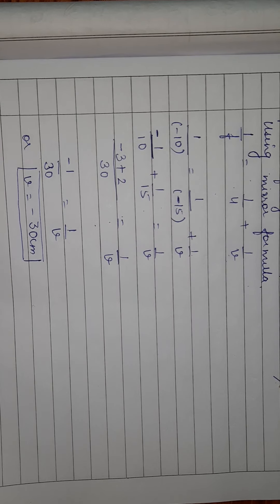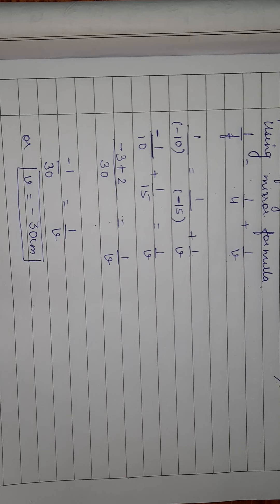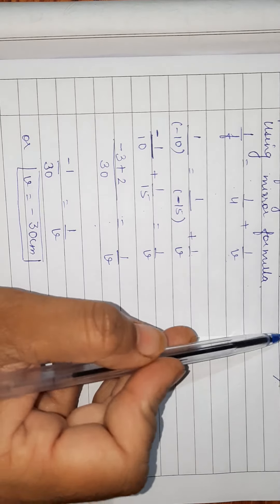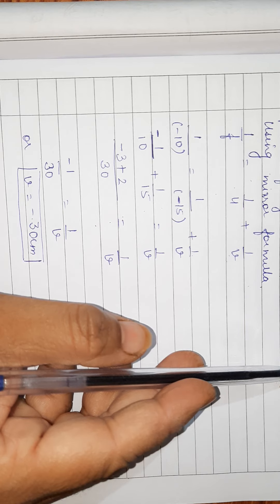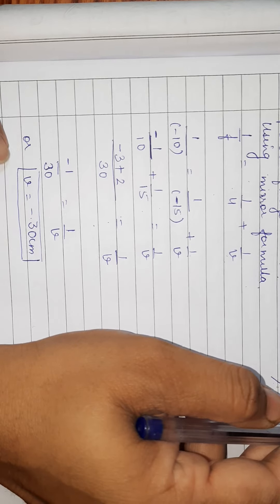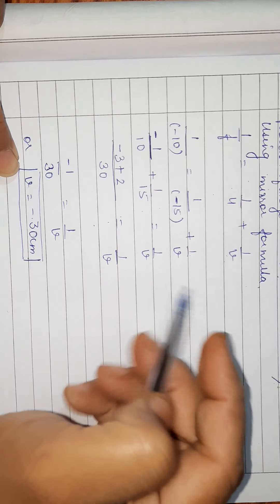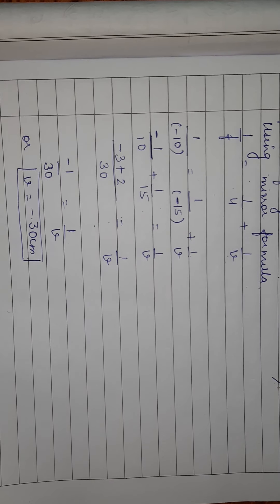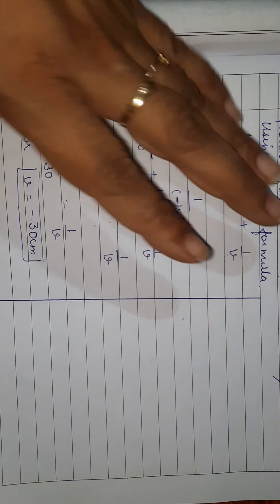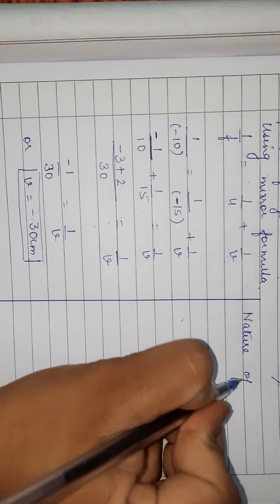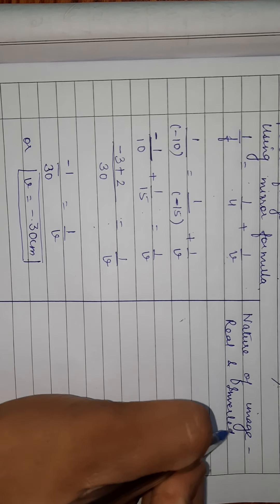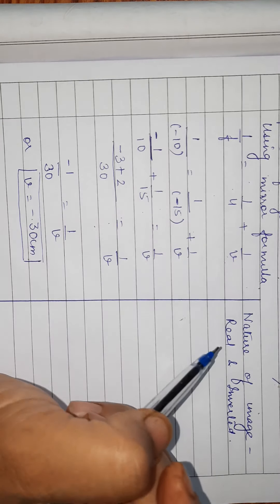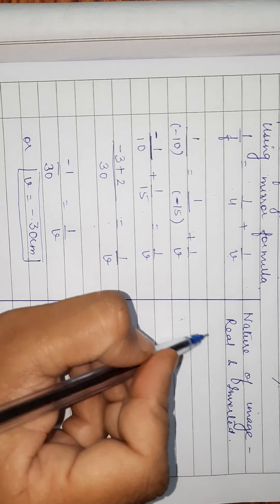Position of image is minus 30 centimeter. Since the image is formed on the same side as the object — towards the left — the image is real and inverted. That is the nature of image. Next we have to find the size, so we will use the formula for magnification.